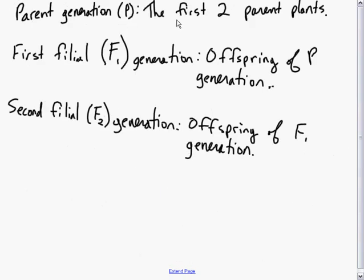Now let's define some of these terms. Parent generation we'll designate with a P, and that's the first two parent plants. What's known as the first filial generation are the children or offspring of the P generation, and we tend to call those F1.